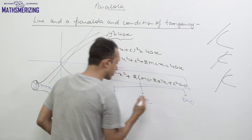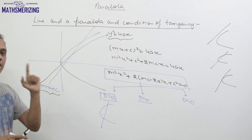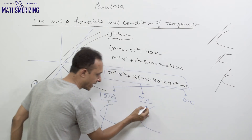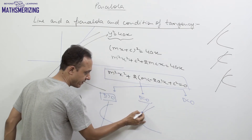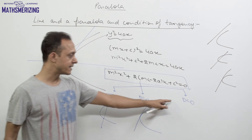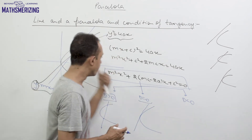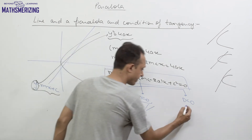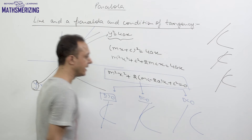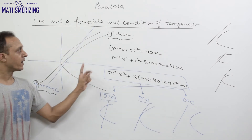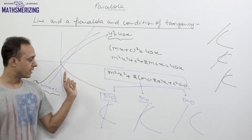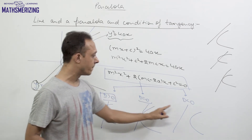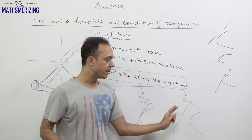When D = 0, there is only one point of intersection, which means the parabola and line touch each other. When D < 0, there is no point of intersection, so the line and parabola never intersect. This is how we work out the three conditions for a line relative to a parabola.